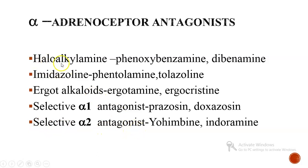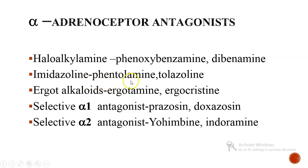The examples for haloalkalamines are phenoxybenzamine and dibenamine. The examples for imidazolines are phentolamine and tolazoline. Phentolamine blocks both alpha-1 and alpha-2 receptors, leading to vasodilation and an increase in noradrenaline release.